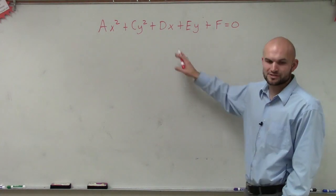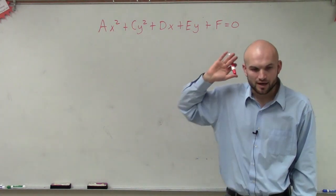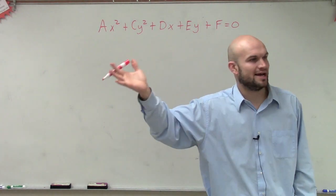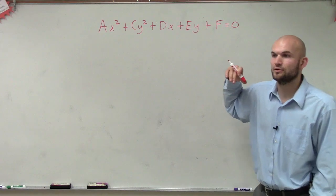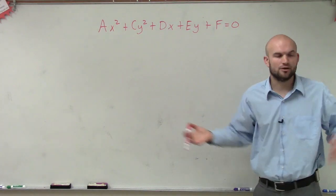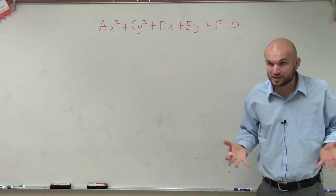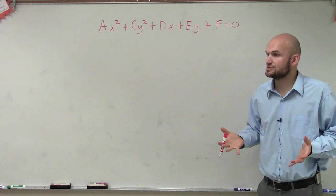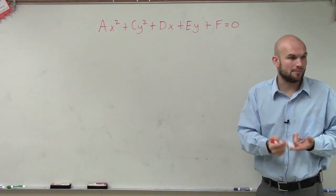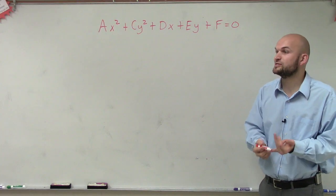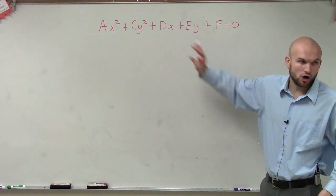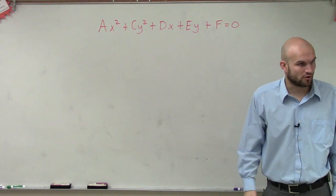If we look at this, here is going to be pretty much a general form for a conic. So we can write all of our conic sections — a parabola, an ellipse, a hyperbola, a circle — all in this general form.